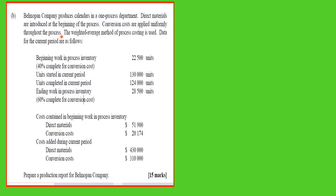Direct materials introduced at the beginning means that 100% of the raw materials would have gone into the output, even if units are still in work in process. There is no partial percentage for materials. Conversion cost — which includes overhead and direct labor — is applied uniformly through the process, so you use a percentage for work in process. The weighted average method of process costing is used here.